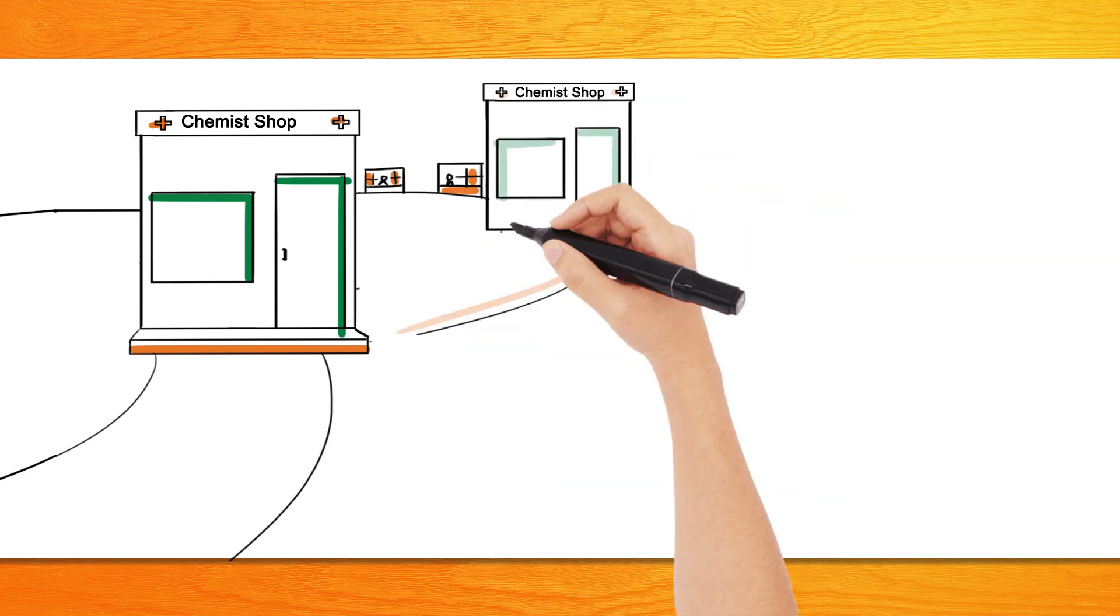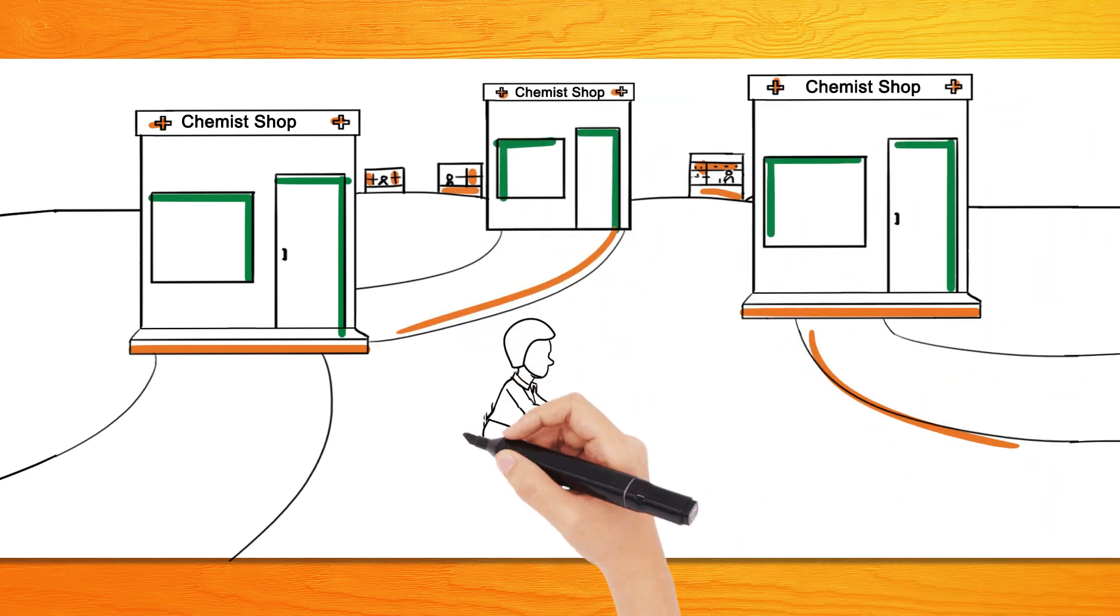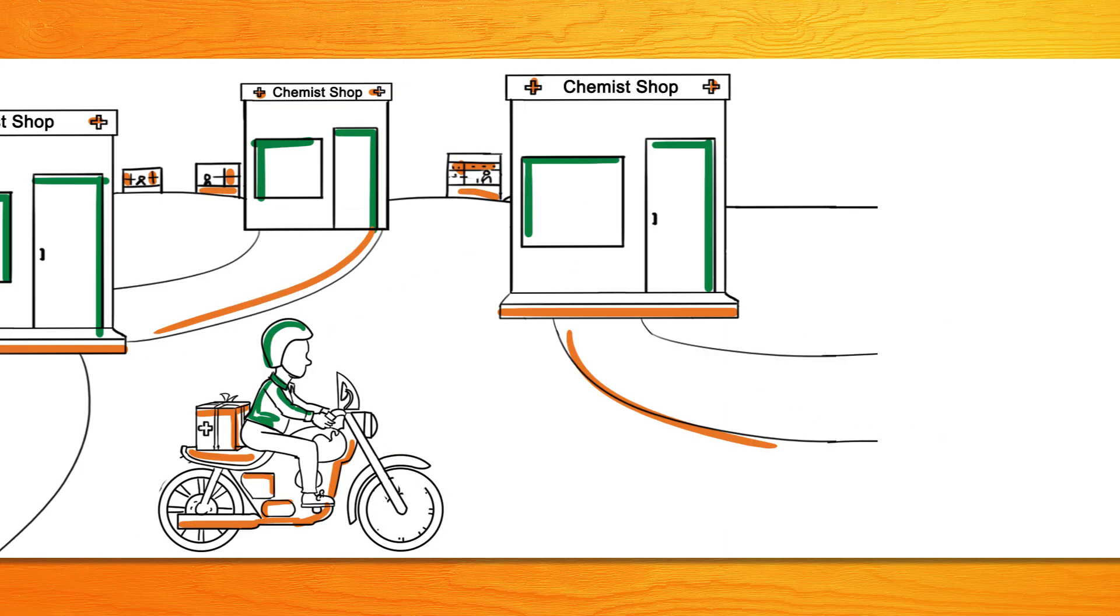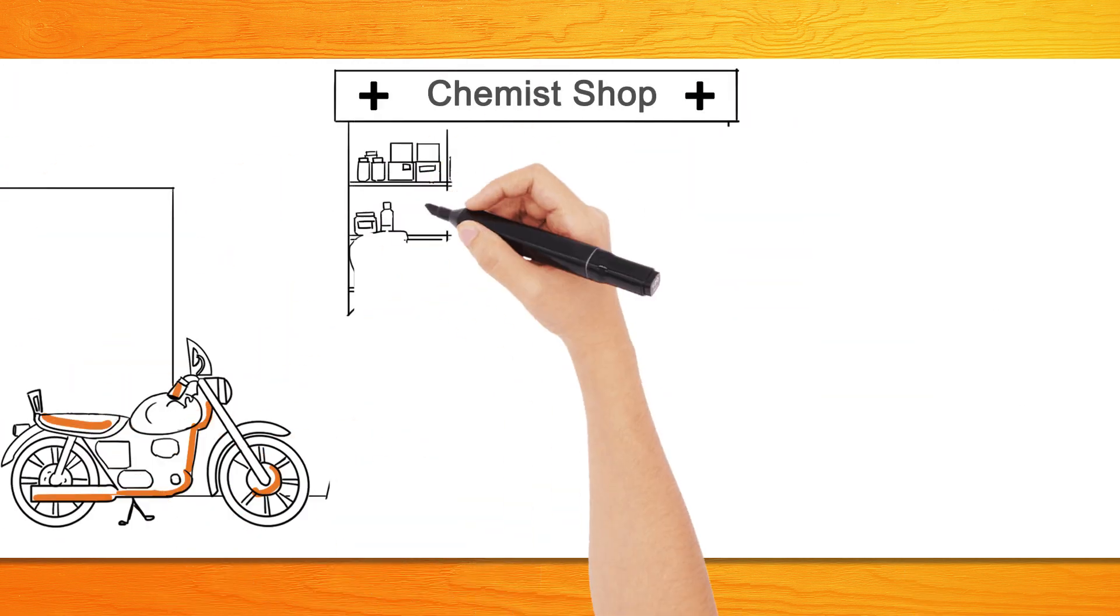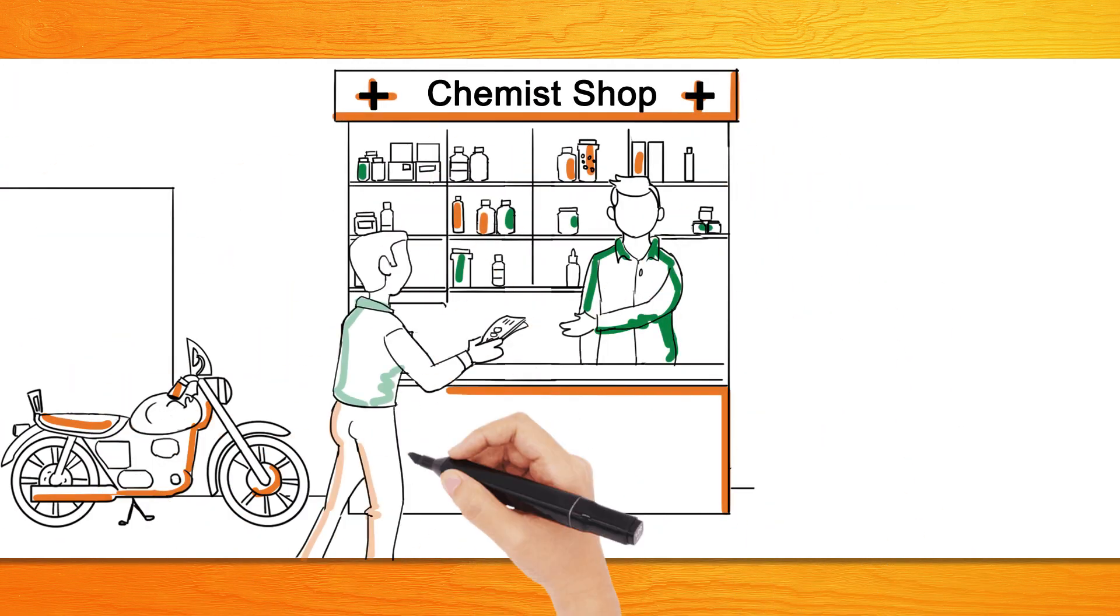Instead of covering 40 stores daily, the feet on street cover a lesser number as collections become time-consuming. The feet on street deliver the products to the chemists and wait to collect payments.